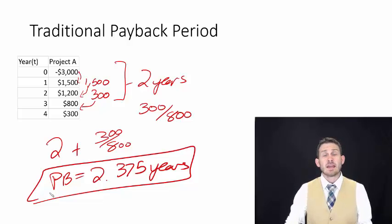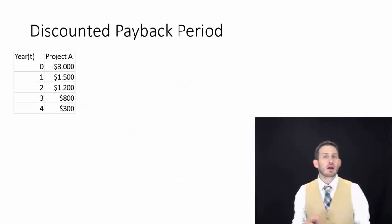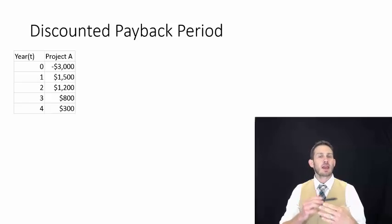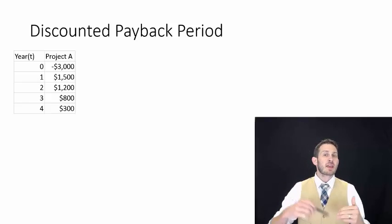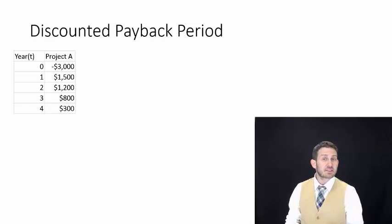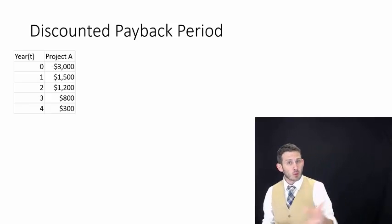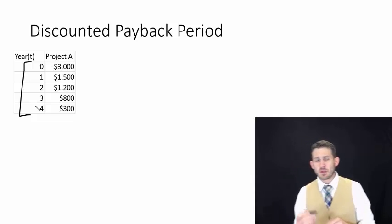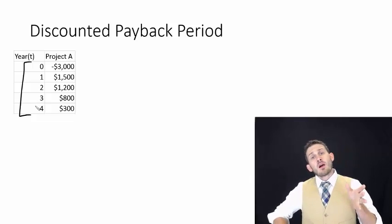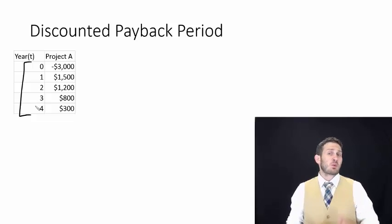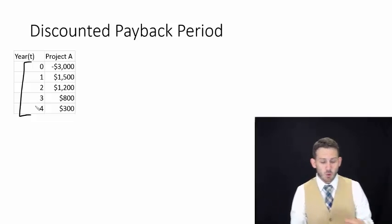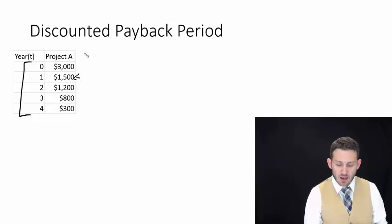The next step is to look at the discounted payback period, which is very similar to the traditional payback period, except we are taking into account how long it takes for the discounted cash flows to pay us back. We look at the value of these projects in year one, year two, year three, and year four, asking: what is the actual value of these projects worth? Because the farther in the future a cash flow comes, the less it's worth to us today. We have to evaluate what the present value of each of these cash flows is going to be.